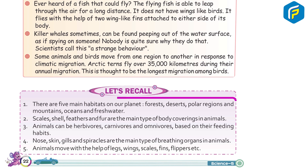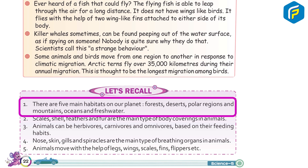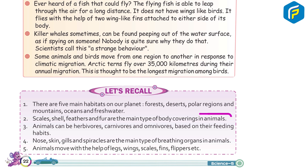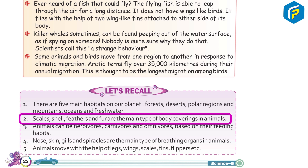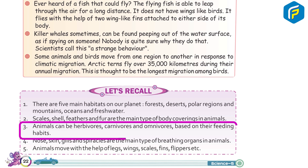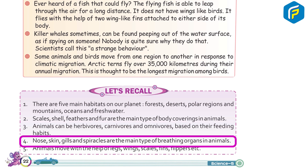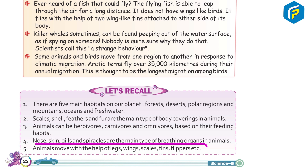Let's recall: 1. There are five main habitats on our planet: forests, deserts, polar regions and mountains, oceans, and freshwater. 2. Scales, shells, feathers, and fur are the main types of body covering in animals. 3. Animals can be herbivores, carnivores, and omnivores based on their feeding habits. 4. Nose, skin, gills, and spiracles are the main types of breathing organs in animals. 5. Animals move with the help of legs, wings, scales, fins, flippers, etc.